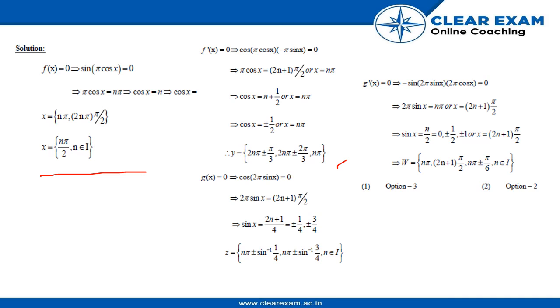In solving this equation, and for g dash x also we get w is equal to this. So for the first part, the option is 3, and second part, the correct answer is option 2.